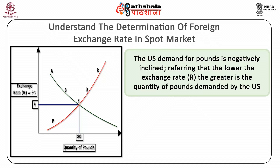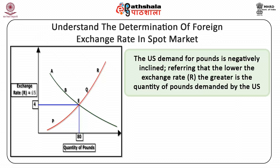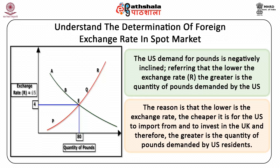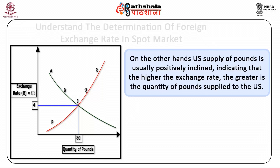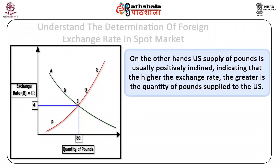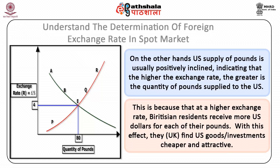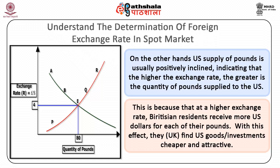The US demand for pounds is negatively inclined, meaning that the lower the exchange rate, the greater is the quantity of pounds demanded by the US. The reason is that the lower is the exchange rate, the cheaper it is for the US to import from and to invest in the UK, and therefore the greater is the quantity of pounds demanded by US residents. On the other hand, the US supply of pounds is usually positively inclined, indicating that the higher the exchange rate, the greater is the quantity of pounds supplied to the US. This is because at a higher exchange rate, British residents receive more US dollars for each of their pounds.